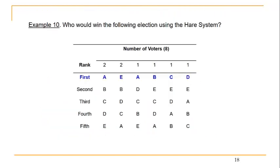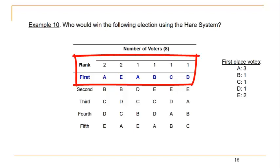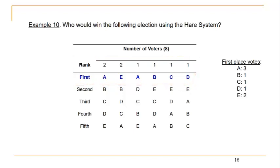One final example: who's going to win this election using the HAIR system? We start with those first place votes. A has three; B, C, and D each have one; and candidate E receives two. Since candidates B, C, and D each have the least number of first place votes with one apiece, we eliminate all three of those candidates and only focus on candidates A and E.